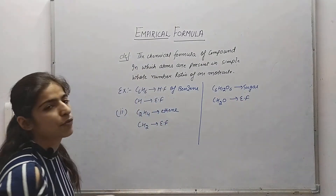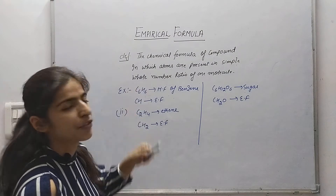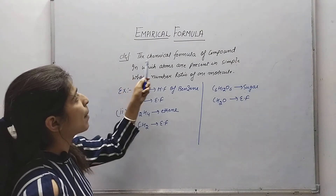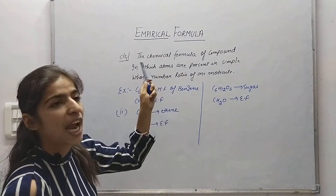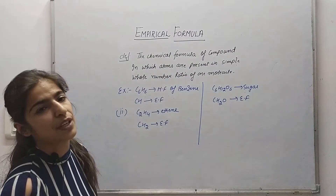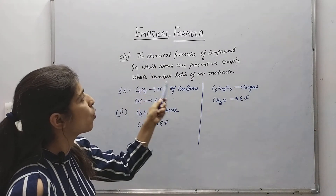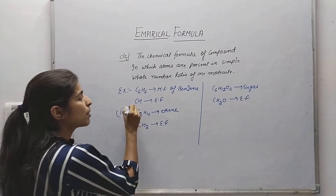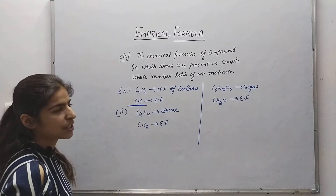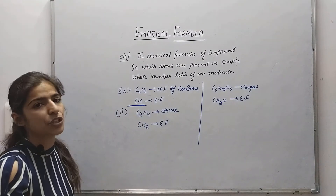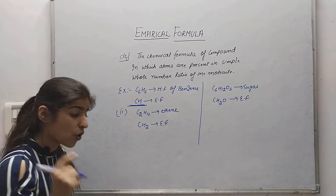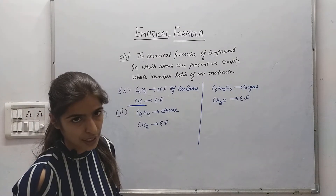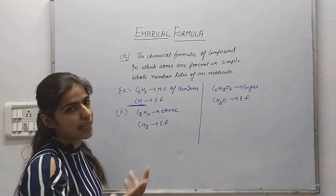What is the empirical formula? Let's see the definition and relate it. The empirical formula is the chemical formula of a compound in which atoms are present in the simplest whole number ratio of one molecule — represented as 1, 2, 3, and so on.